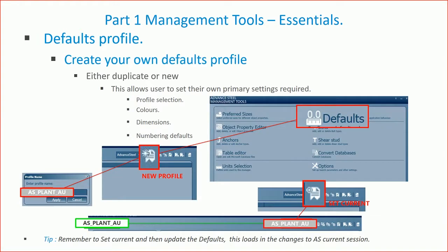You should create your own defaults profile in Advanced Steel — you can copy, duplicate, or create a new one. Give it a suitable name without spaces; use underscores between words. The important thing is to set it current — that becomes the active profile you work in, and you can then go in and change all the parameters behind it. I did a class three or four years ago at AU covering many more settings. Always set it current; if you create a profile, set it current, then reload the database or start a new session.